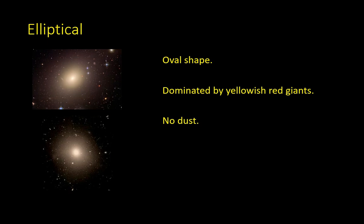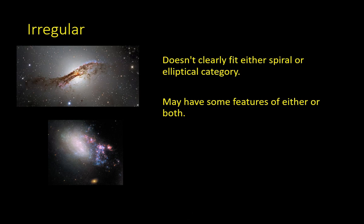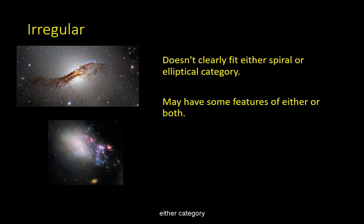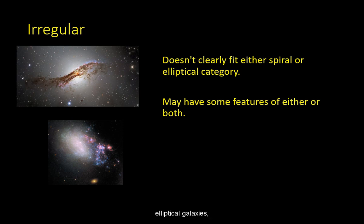Elliptical galaxies are very different from spiral galaxies, in that they contain no dust, are yellowish in color, have no spiral arms, but rather an oval shape. Finally, there are the irregular galaxies that don't fit either category clearly. They may contain some of the features of either spiral or elliptical galaxies, such as star-forming regions, or an oval shape and yellowish color.